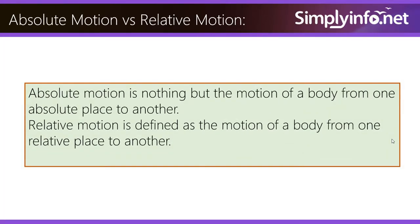Absolute Motion vs Relative Motion. Absolute motion is nothing but the motion of a body from one absolute place to another. Relative motion is defined as the motion of a body from one relative place to another.